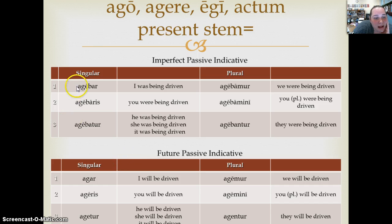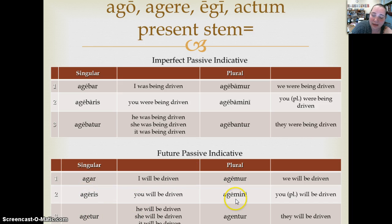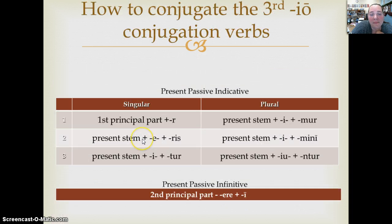Our paradigm verb is ago, agere, egi, actum. Its present stem is ag. So: first principal part plus R gives agor — I am driven; then ag plus short E plus RIS gives ageris; agitor; agimur; agimini; aguntur. Present passive infinitive is agi — to be driven. Imperfect passive: agibar, agibaris, agibatur, agibamur, agibamini, agibantur. Future passive: agar, agaris, agatur, agamur, agamini, agentur.